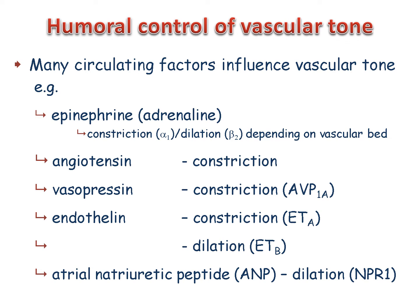Vasopressin, also called anti-diuretic hormone, is a peptide hormone released into the circulation from the posterior pituitary gland in response to raised osmolarity of blood. It constricts blood vessels by binding to and activating AVP receptors, which are G-protein coupled receptors coupled to phospholipase C. The subtype of receptor mediating vasoconstriction is AVP-1A.